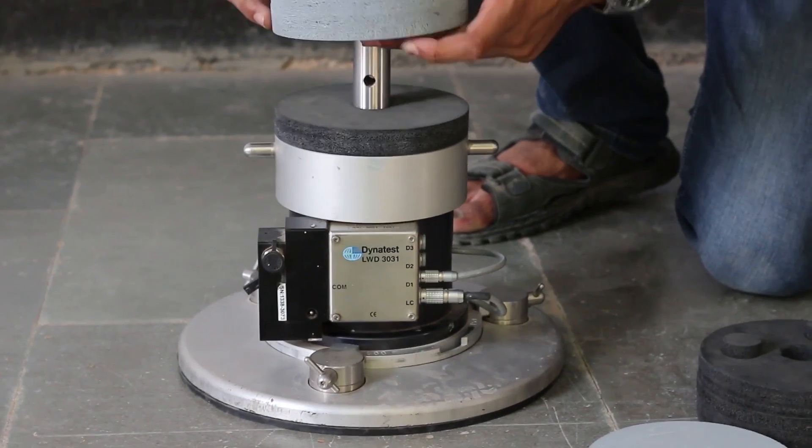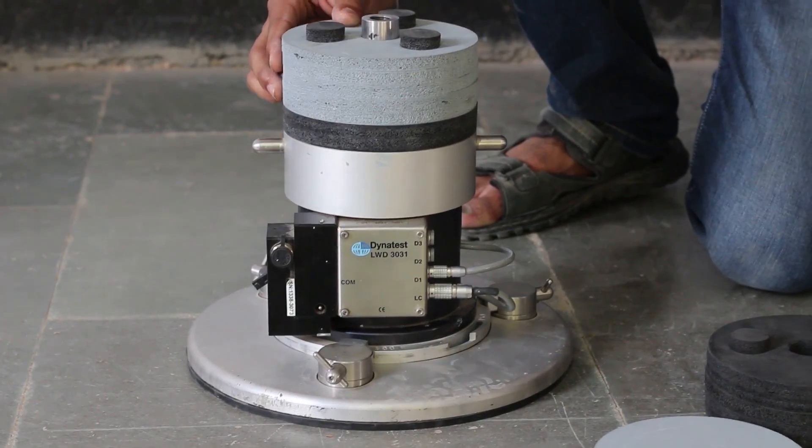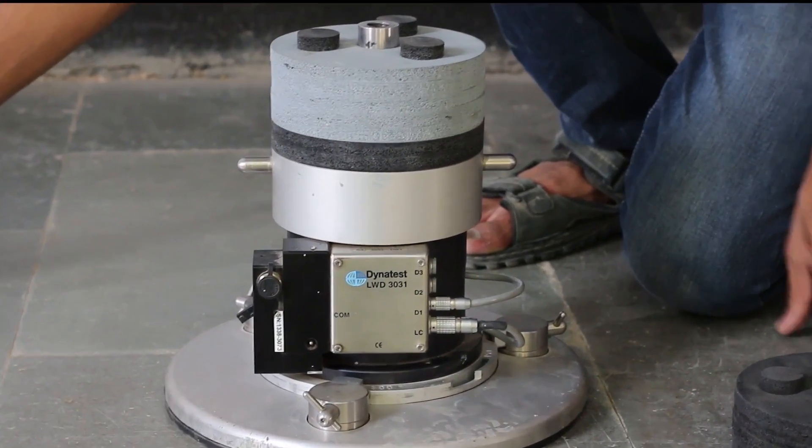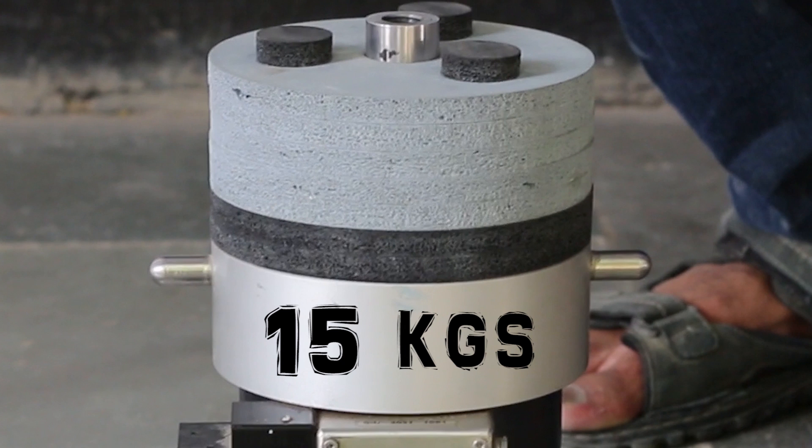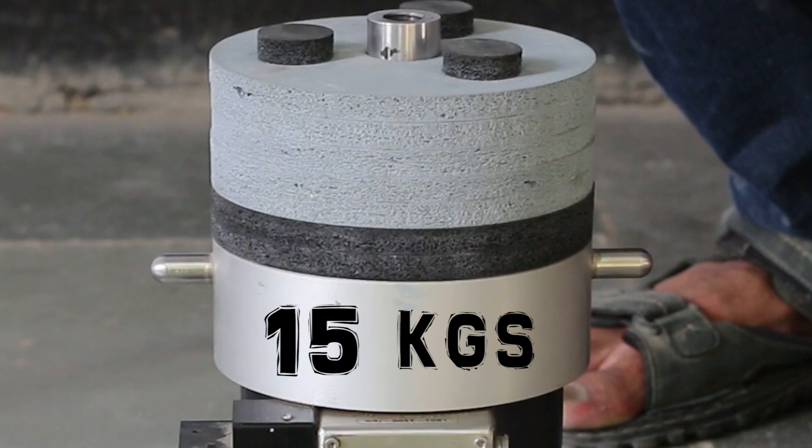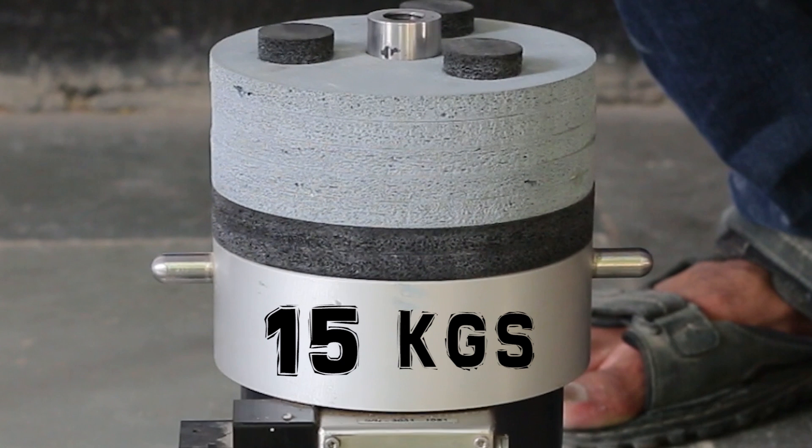To get a 15 kg shock absorber combination, first put the black colored two pad shock absorber at the bottom and grey colored four pad shock absorber at the top.